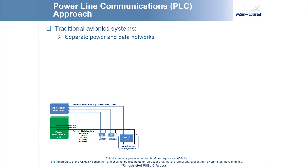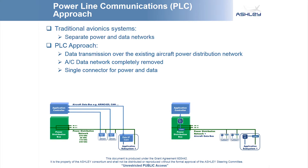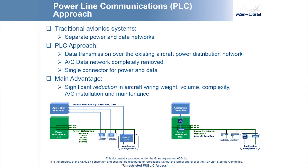One potential solution is Power Line Communications, abbreviated here as PLC. With the PLC approach, data is transmitted over the existing aircraft power distribution network. The data network may then be completely removed. PLC components are integrated into application devices and therefore a single connector is provided for both power and data. PLC has the potential to provide a significant reduction in aircraft wiring weight and volume.